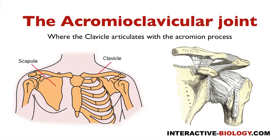Then we have a set of two ligaments: the coracoid ligament and the trapezoid ligament. Right here we have the trapezoid ligament and the coracoid ligament. How can you tell the difference? The one that's medial is the coracoid ligament, the one that's lateral is the trapezoid ligament, and the trapezoid ligament has kind of a trapezoidal shape — that's another distinguishing characteristic.